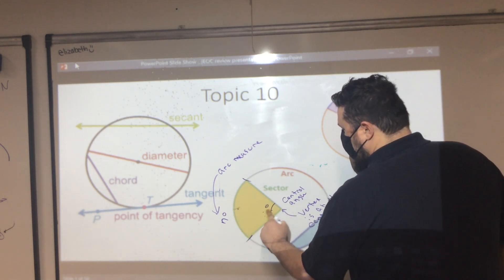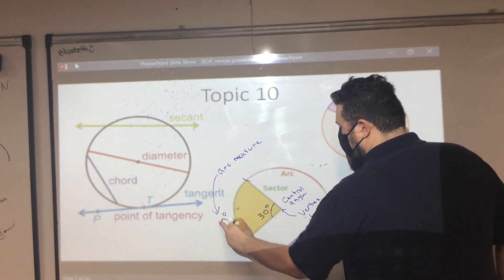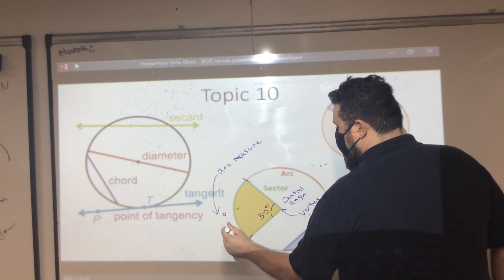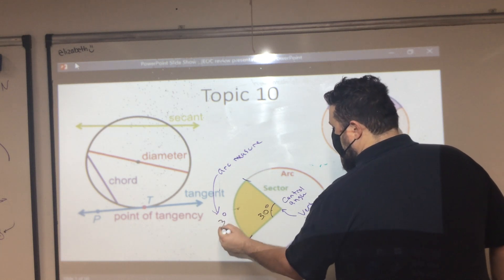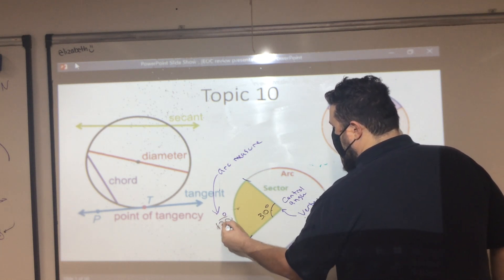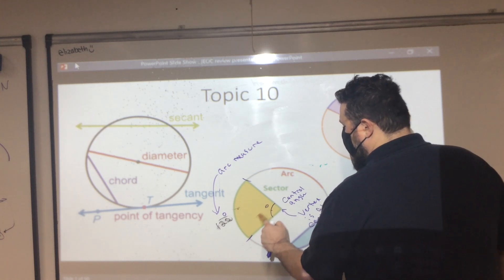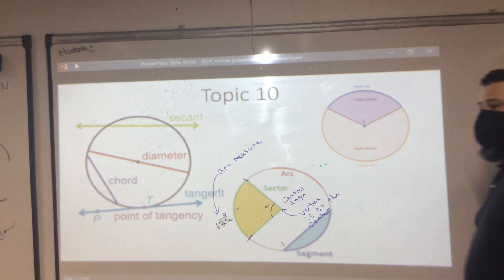So if this central angle is 30 degrees, what would this arc be? And if this is 120, what's the arc? Brie, if the arc measure is 120, what's the central angle measure?